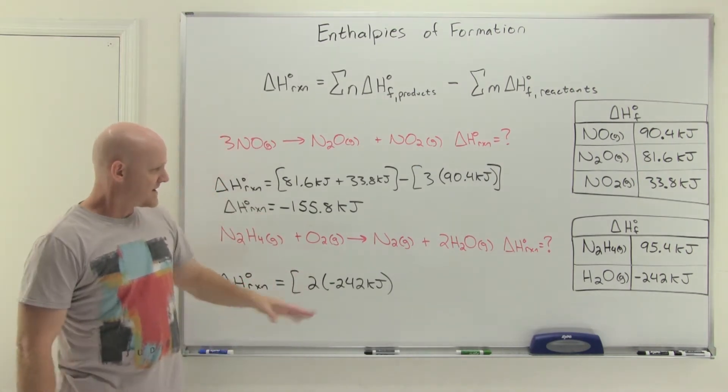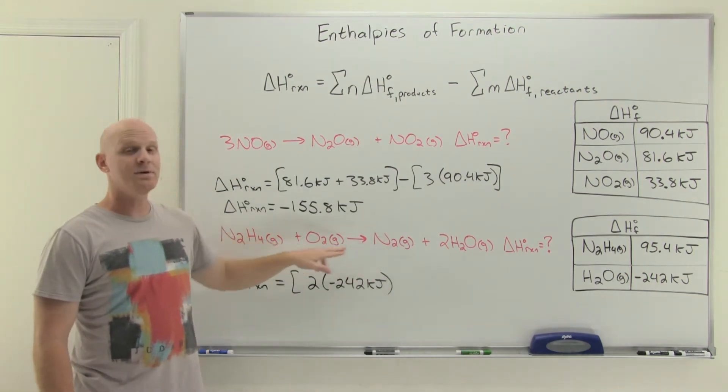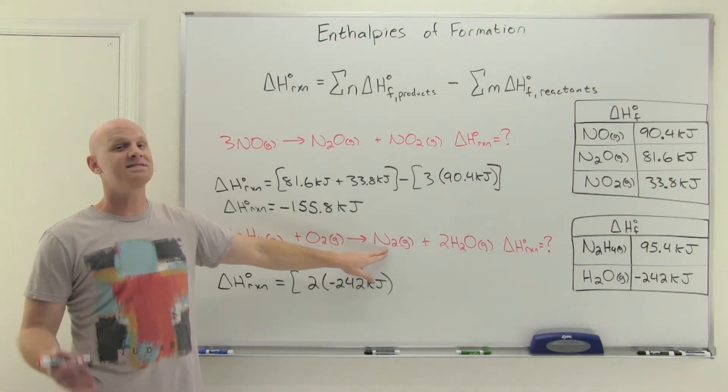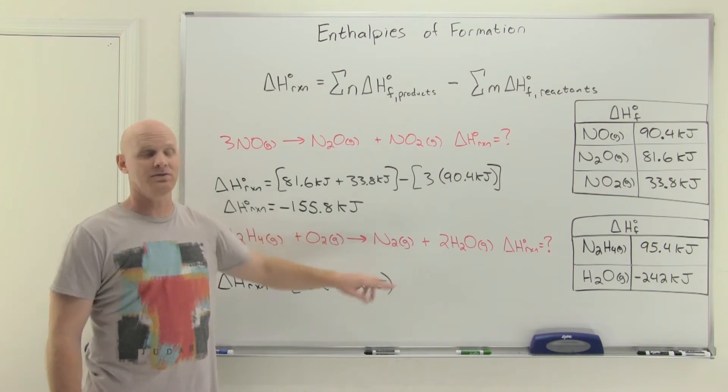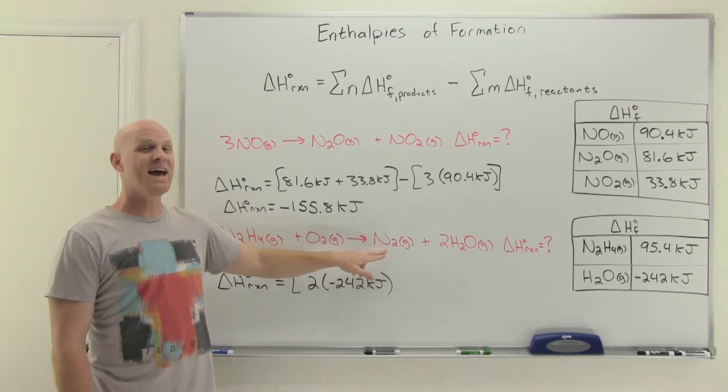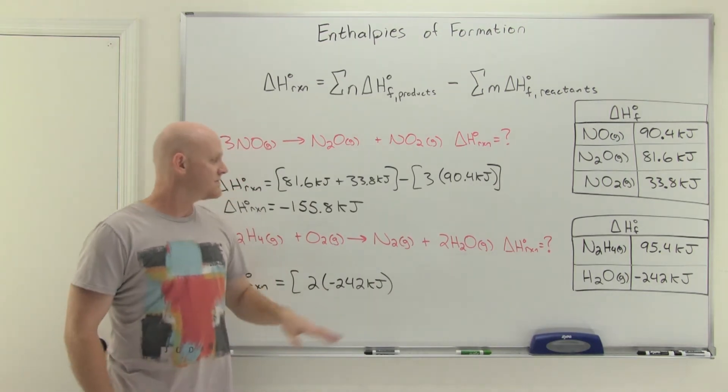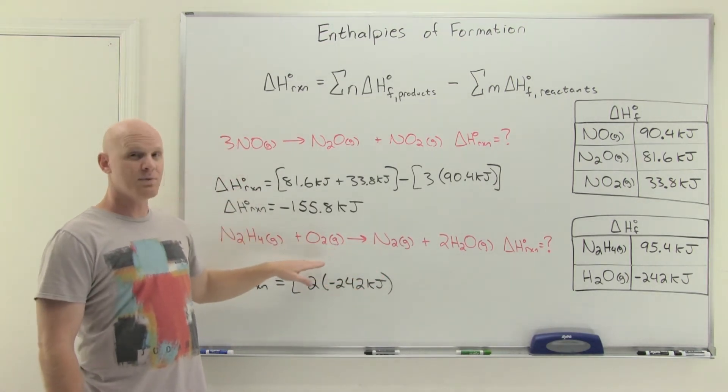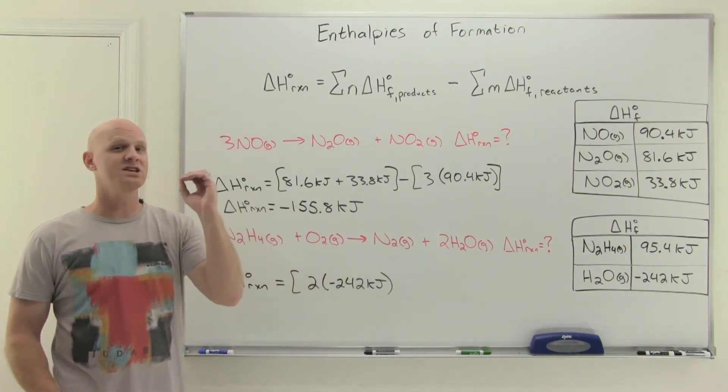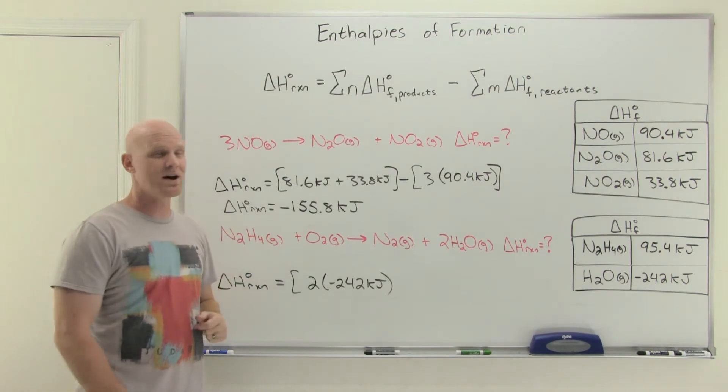These are both elements. Compounds are never going to have a zero value, but if it's an element and it has to be in its standard state, notice like for N2, N2 is one of the seven diatomics. Its standard state is diatomic, and it is in the gaseous phase. If I said N2 liquid, it wouldn't be zero, and I'd have to give you a number in the table. If I didn't make it diatomic, if I just said N gas, not N2 gas, but just N gas, I'd have to give you a number in a table because that wouldn't be the standard state for elemental nitrogen. But for N2 and O2, these are both diatomics. They're both gases in their standard states, and so both of these are going to have enthalpies of formation of zero by definition.